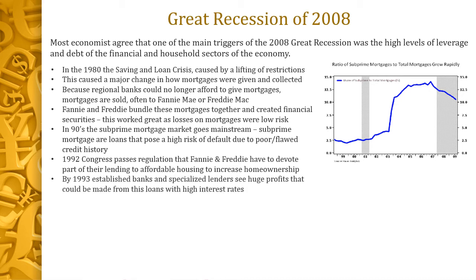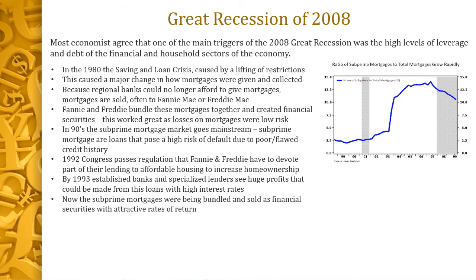By 1993, not only were Freddie and Fannie doing this, but many established large banks and specialized lenders like Countrywide were starting to come into play, seeing huge profits from these loans because they had really high interest rates. Somebody with good credit might pay three percent on a mortgage, while somebody with bad credit might pay six, seven, or eight percent. They were given all kinds of funky mortgage types — interest-only, balloon payments. These subprime mortgages were also being bundled into financial securities and sold just like those without subprime mortgages.